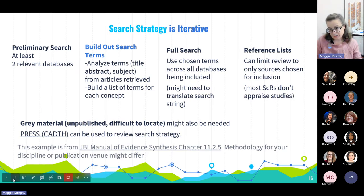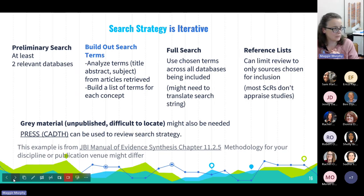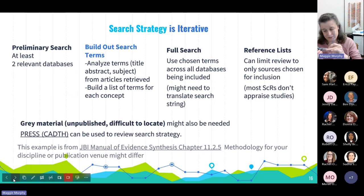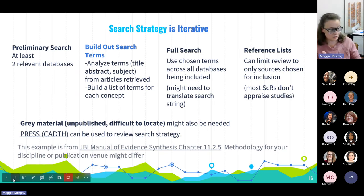The search strategy is similarly iterative — you can adjust, go back, and repeat. This part was pulled from the JBI manual. You want to do just a brief search in two databases that seem relevant, pull the most useful results, and look at the terms in titles and abstracts, maybe looking for subject headings. Then build a table of terms for each of your concepts and run that against all the databases you plan to include. Reviewing reference lists is typically done, and depending on your question you might also need to include unpublished or difficult-to-locate material. There's a really nice peer review of search strategy called PRESS that some librarians use.